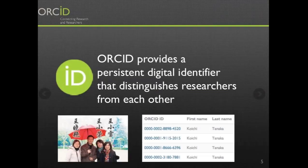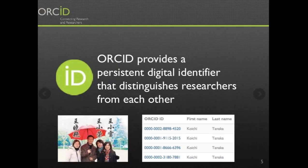ORCID's role is providing a persistent digital identifier for people participating in the research community. The picture on this slide shows three people all with the same transliterated name of Koishi Tanaka. When you look at their name in Japanese characters they are different, but when transliterated to Roman characters they all have the same name. They now each have an ORCID identifier — a way of uniquely identifying themselves when publishing, creating datasets, or interacting with grants organizations. This is just one example of the utility of an identifier for a person, but there are many others.